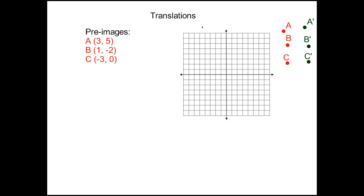Let's start by plotting the pre-image points. Point A is (3, 5) and that goes in the first quadrant, right about there. Point B is at (1, -2). That's going to be in the fourth quadrant. Point C, (-3, 0) ends up smack dab on the x-axis.